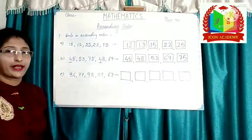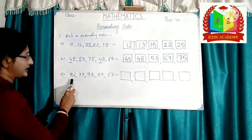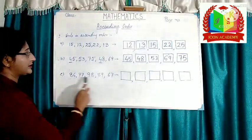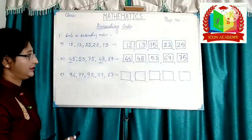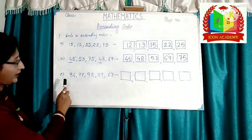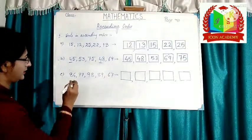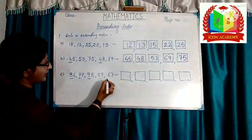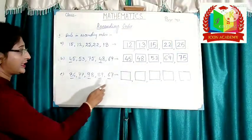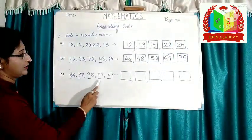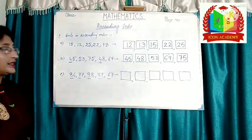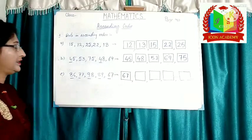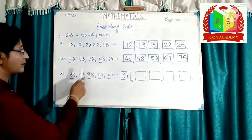Now let's take one more example. Here the numbers are 86, 77, 98, 89, and 67. These are two digit numbers. So first we see the tens place. 6 is smaller than the other four digits. So 67 is the smallest number in this series. Write 67. After 67 comes 77. Write 77.